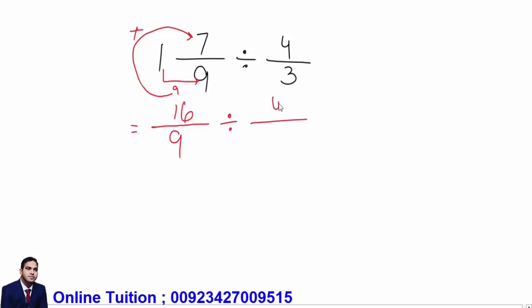Division: sixteen over nine divided by four over three. Next step: after changing the mixed fraction into a simple fraction, change this division sign into multiply. This sign will be changed into multiply, and after that, the denominator will be changed into numerator and the numerator will be changed into denominator. Now three over four.